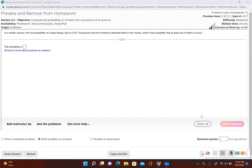In this problem, we're going to take a look at the concept of finding the probability of at least one. So it states, in a certain country, the true probability of a baby being a girl is 0.473. Among the next five randomly selected births in the country, what is the probability that at least one of them is a boy?